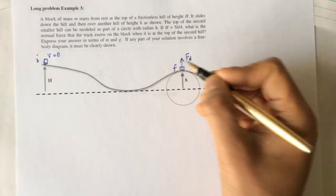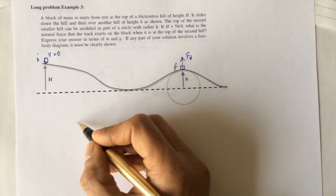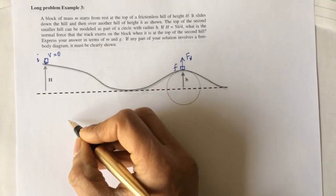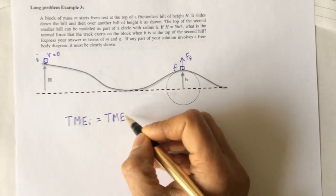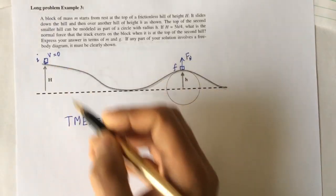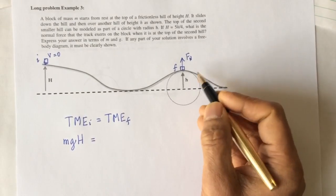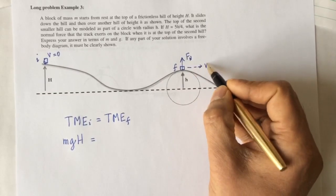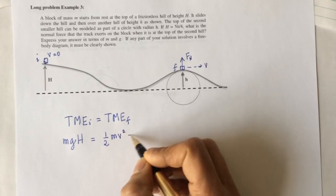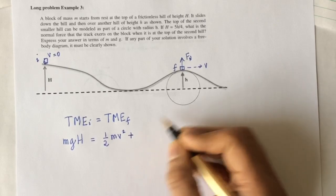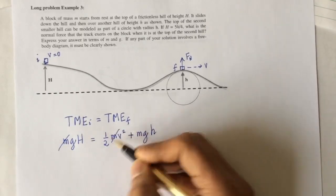I'll call this the initial point and this the final point. Because this track is frictionless, we can use the principle of mechanical energy conservation between the initial and final points. The total mechanical energy at the initial point equals the total mechanical energy at the final point. It's just gravity, so it's mg times capital H, and on the other side it's kinetic energy plus gravitational potential energy: one half mv squared plus mgh.